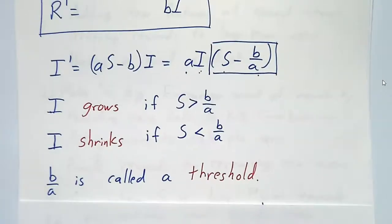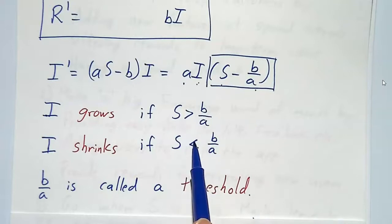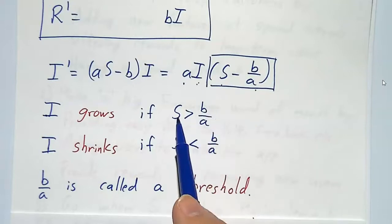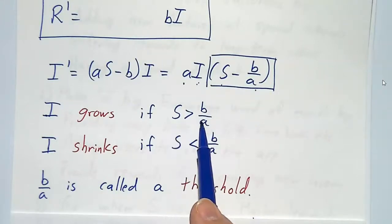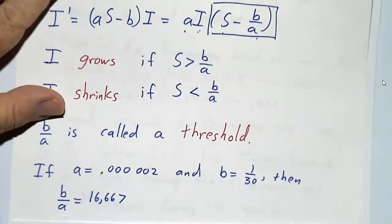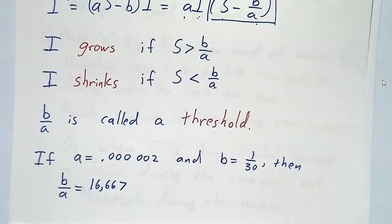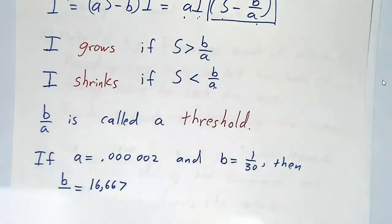Remember, it's not whether i is above or below the threshold — it's whether s is above or below the threshold. If you have lots of potential customers, you grow. If you don't have enough potential customers, you shrink. With the numbers that we used, the threshold comes out to be 16,667. So we started off with 40,000 potentials and we didn't reach our peak until we were down to 16,667. So we had a long way to grow — that's good news.